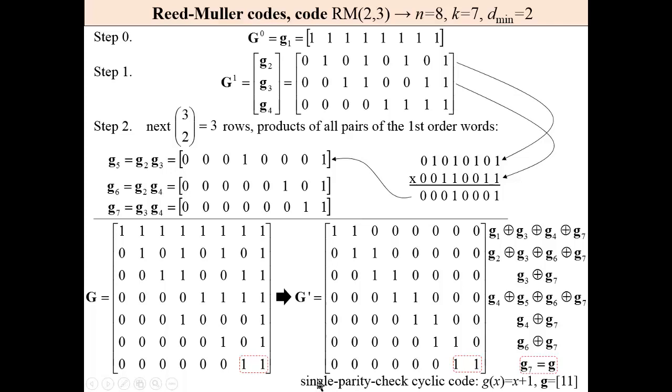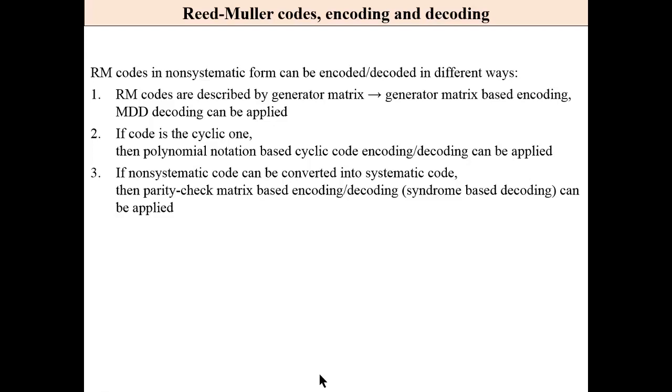Finally, rules of encoding and decoding: Reed-Muller codes in non-systematic form can be encoded and decoded in different ways. First of all, the Reed-Muller codes are described by the generator matrix, and generator matrix based encoding can be applied, and for decoding, MDD minimum distance decoding can be applied.